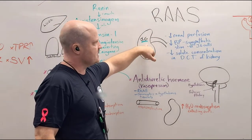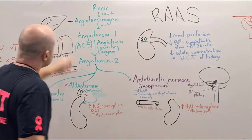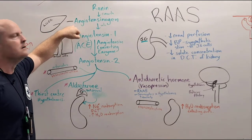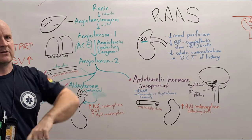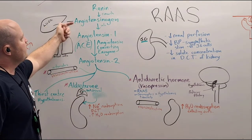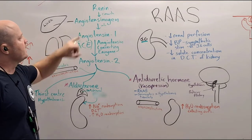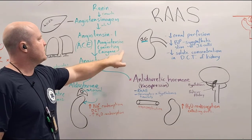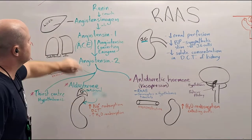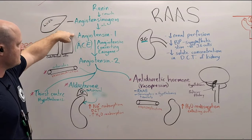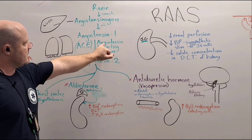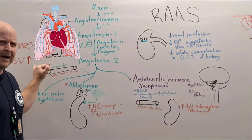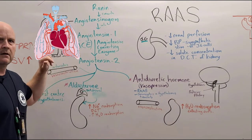Those juxtaglomerular cells will release renin. Renin then converts angiotensinogen — which is floating around in the bloodstream and is created by the liver — into angiotensin 1. Then we've got ACE, which is angiotensin converting enzyme, and that converts angiotensin 1 into angiotensin 2. ACE is released from our endothelial cells, mostly from the endothelial cells in our lungs.